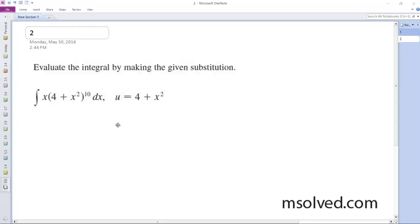Alright, so we want to figure this out. Okay, so u is equal to 4 plus x squared is what they give us.